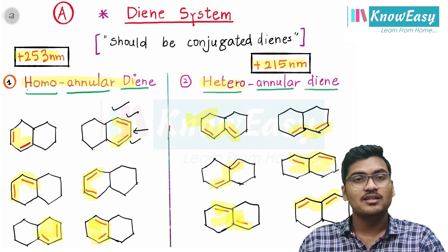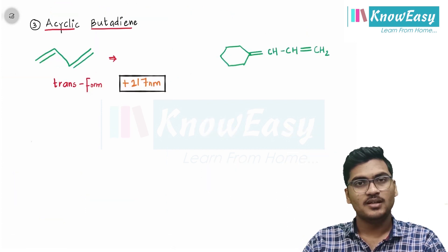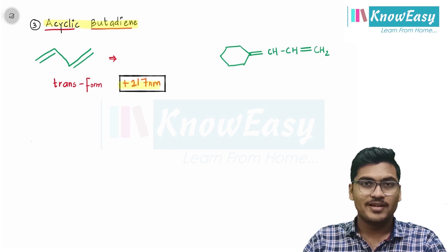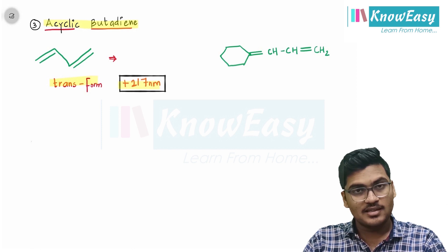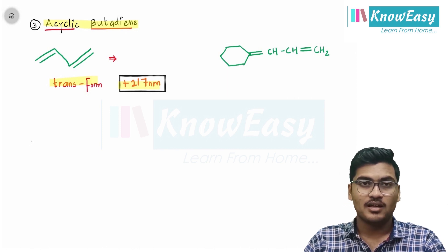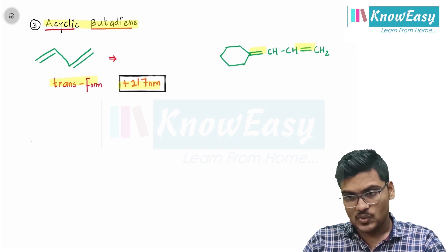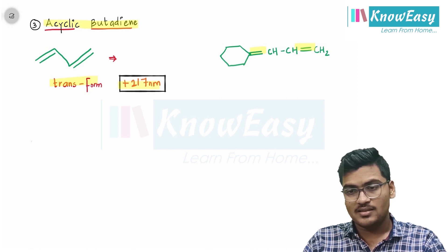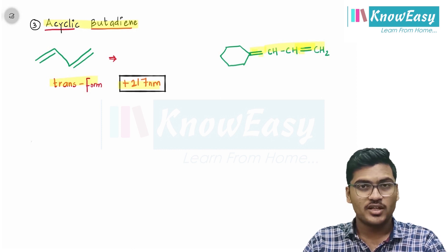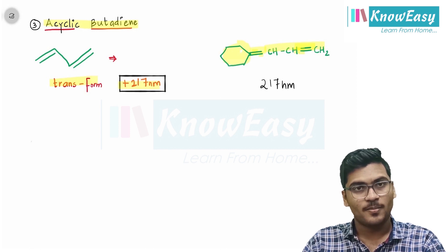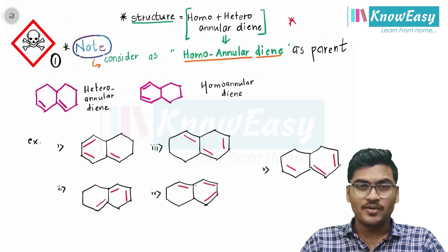This is also an example of a heteroannular system. Now for acyclic butadiene, the value is 217 nanometers. It mostly exists in the transoid form as it is more stable. So if such a question is asked and both bonds are outside the ring — that is just a substitution — in such cases the value will be 217 nanometers for the parent.